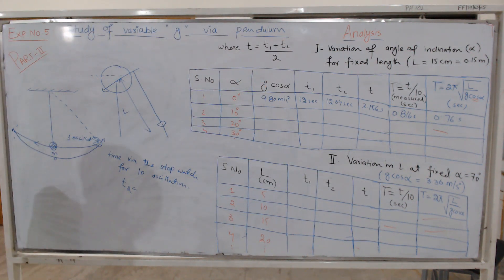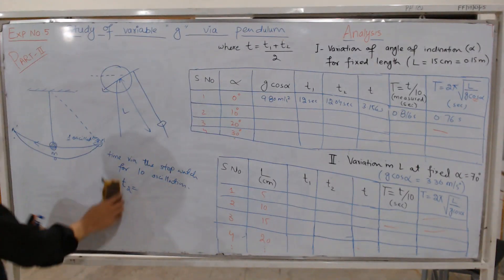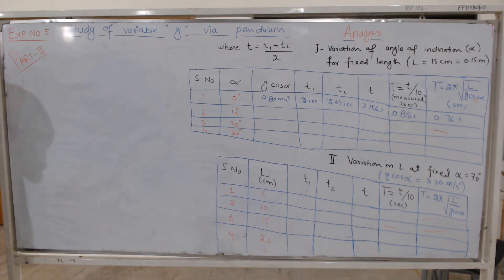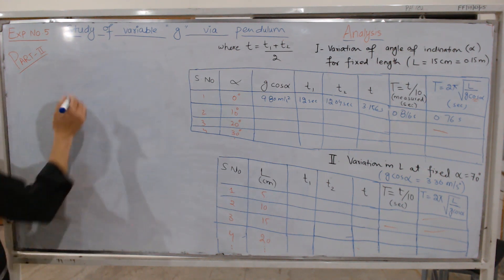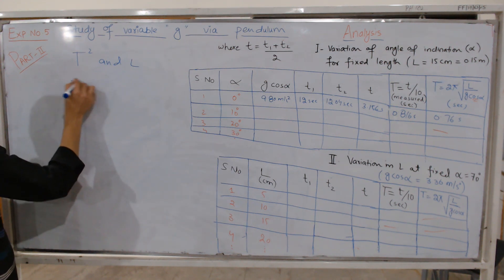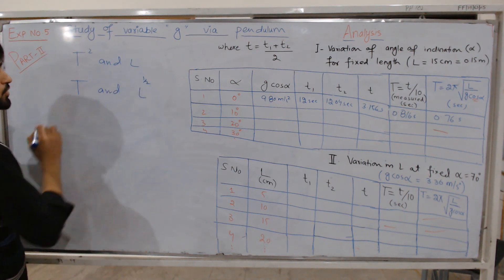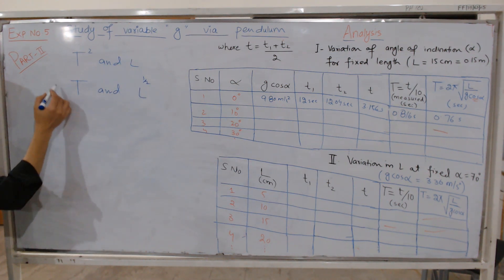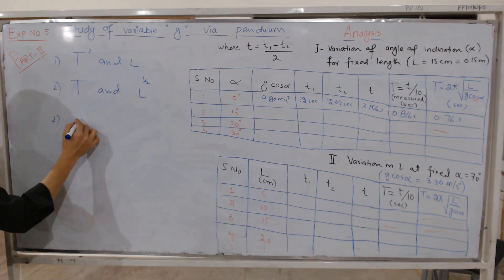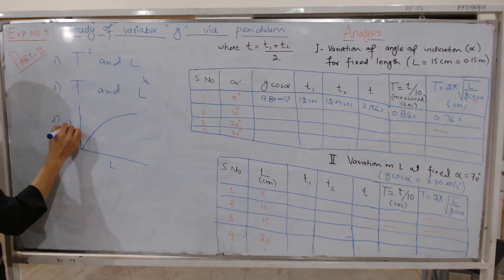This will be the time measured using the stopwatch, and this is the time using the relation for the variable g pendulum. At the end, you will have to plot a graph. You can also insert an extra column for t-squared. As we discussed, you will plot a graph between t-squared and L, or also plot a graph between t and L to the power of one half. For the second case, this will be some non-linear curve, with length L on one axis and time period on the other.